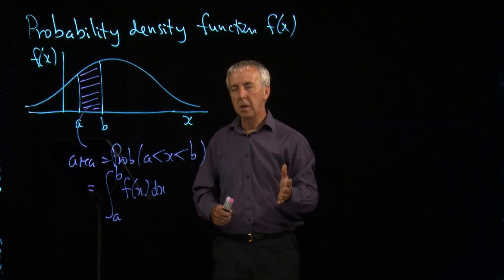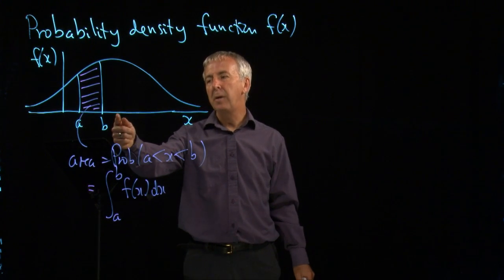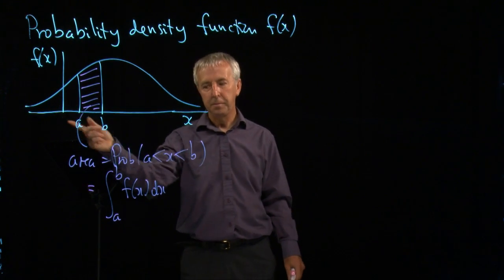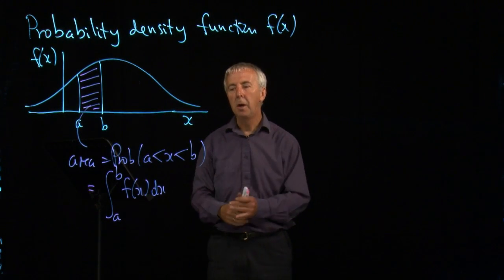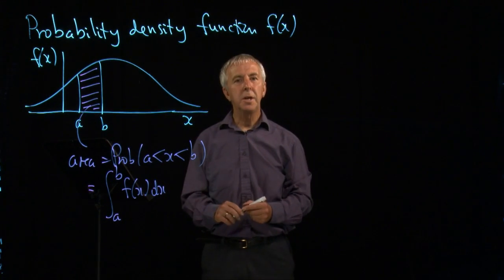That's how we do probabilities, because we can't talk about the probability of a single value of x, because there are an infinite number of possible values. So we have to just look at regions between a and b. Let's look at an example.